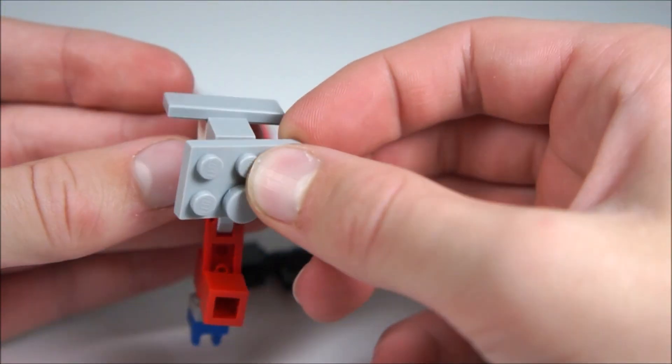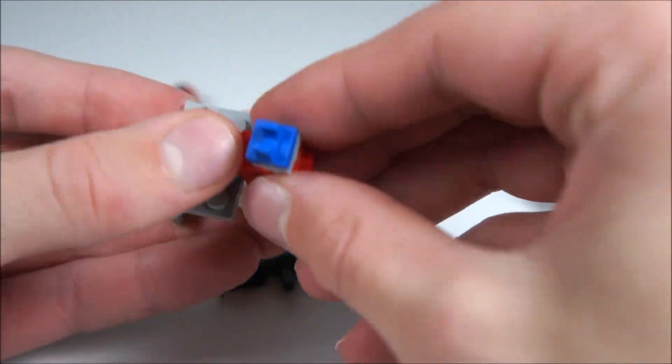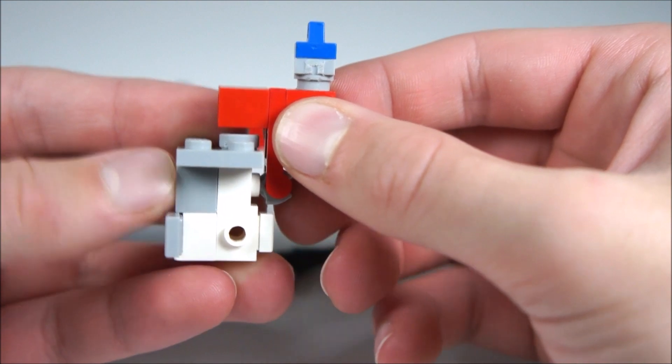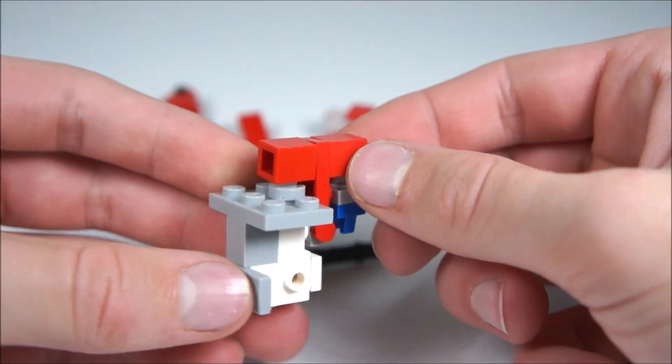And then you're going to build this piece, which is just a two by three with a one by one right there. And that goes right there. And then you can just put that right in like that. And that should look nice. Flip the head around. And there you go.